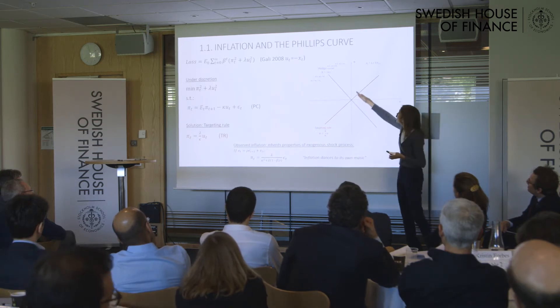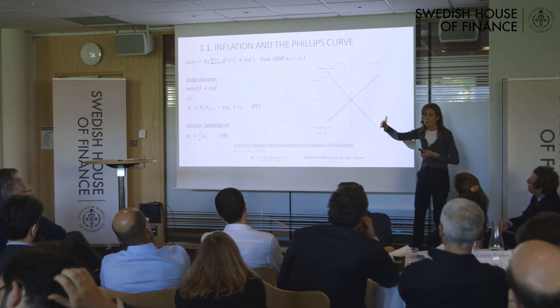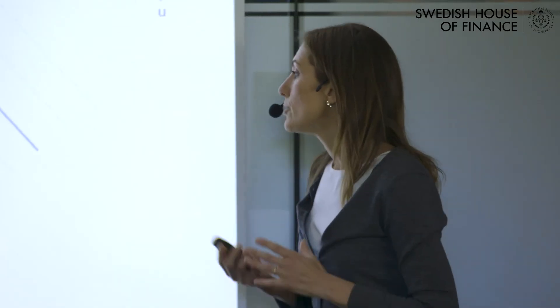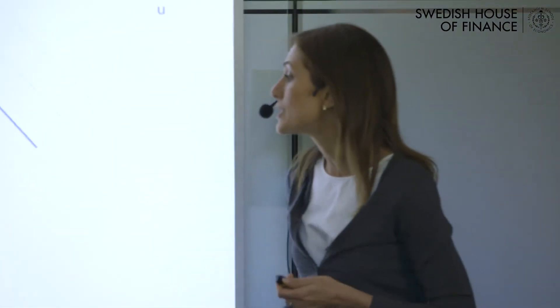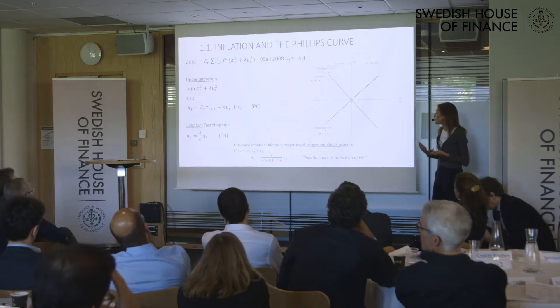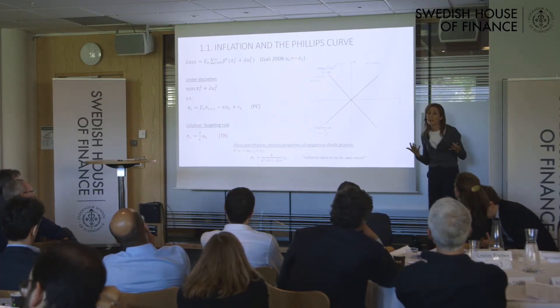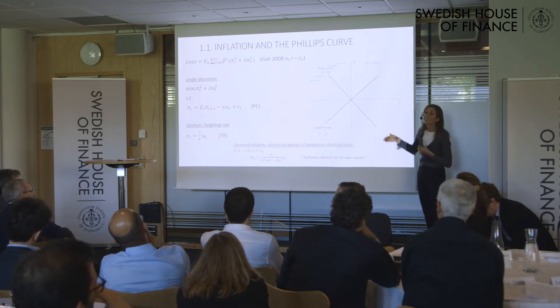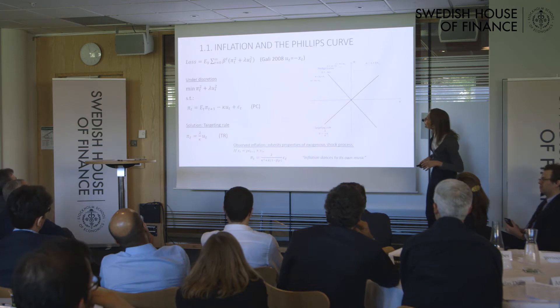In order to identify the Phillips curve, we need enough deviations from the targeting rule. The model also tells us that in equilibrium, inflation will actually inherit the properties of the exogenous markup shock — the epsilon shocks. So in equilibrium we should see inflation dancing to its own music, as long as central bankers are behaving sensibly and following a reasonable targeting rule.